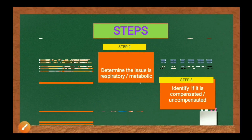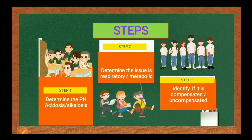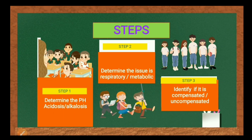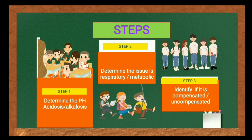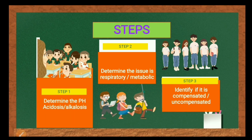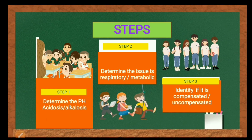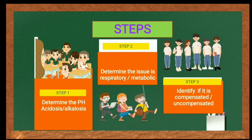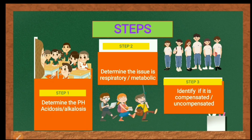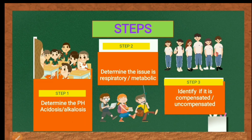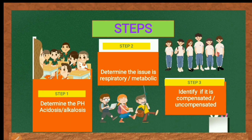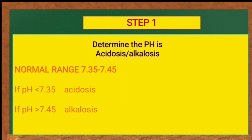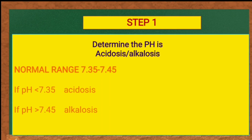There are mainly three steps. Step 1: determine the pH — is it acidosis or alkalosis? Step 2: determine the issue — is it respiratory or metabolic? Step 3: identify if it is compensated or uncompensated. Let's get deep into it. Step 1 — determine pH: acidosis or alkalosis.